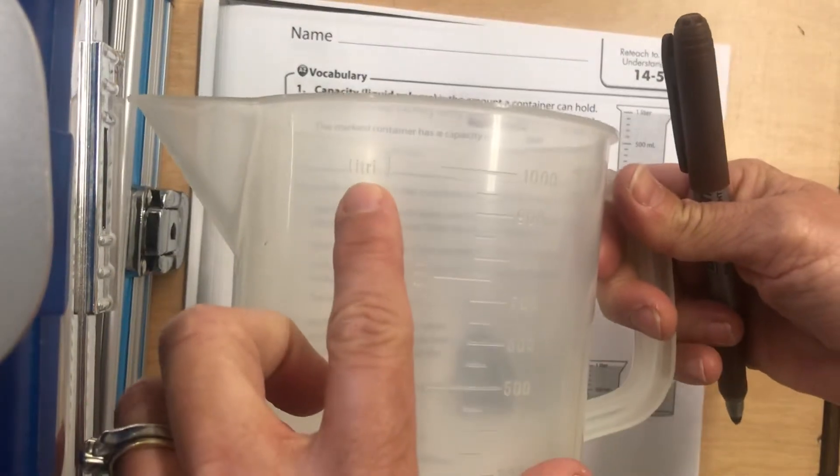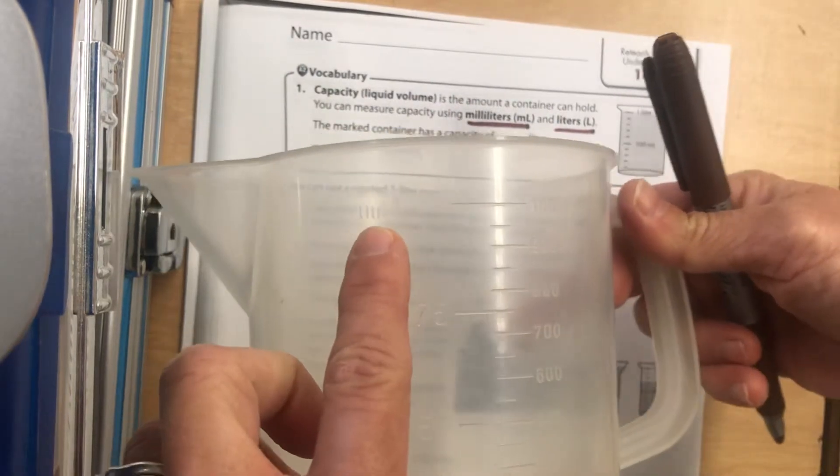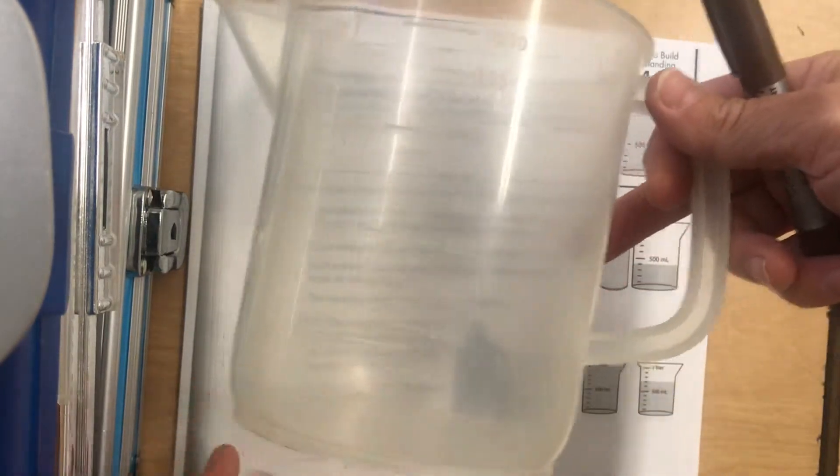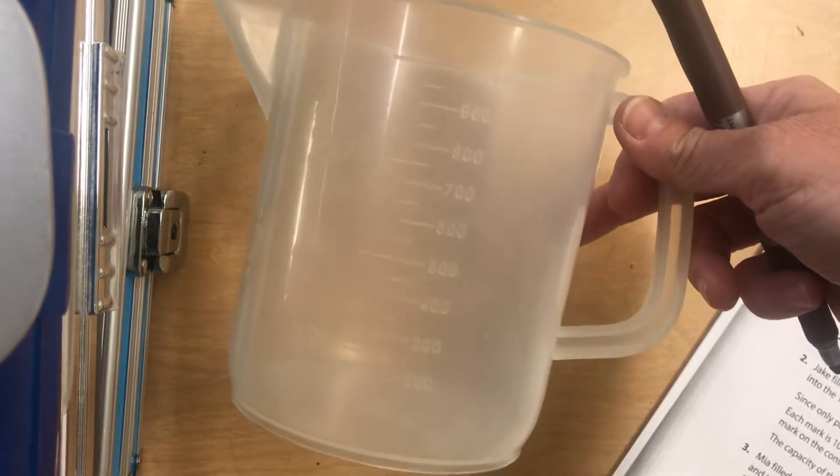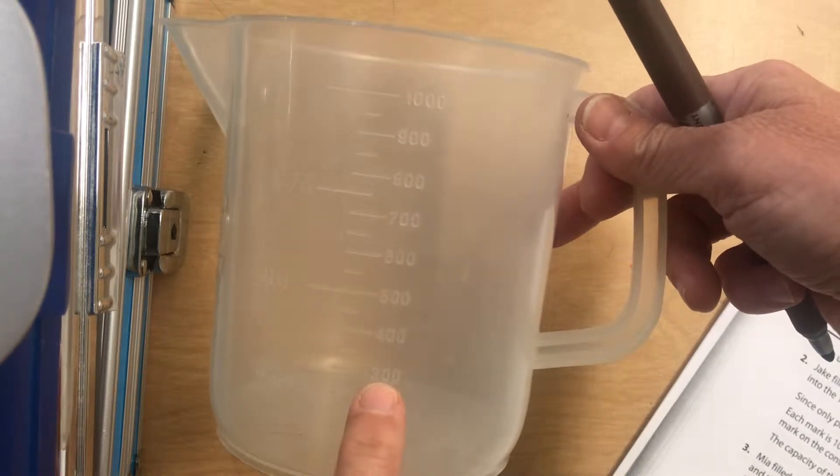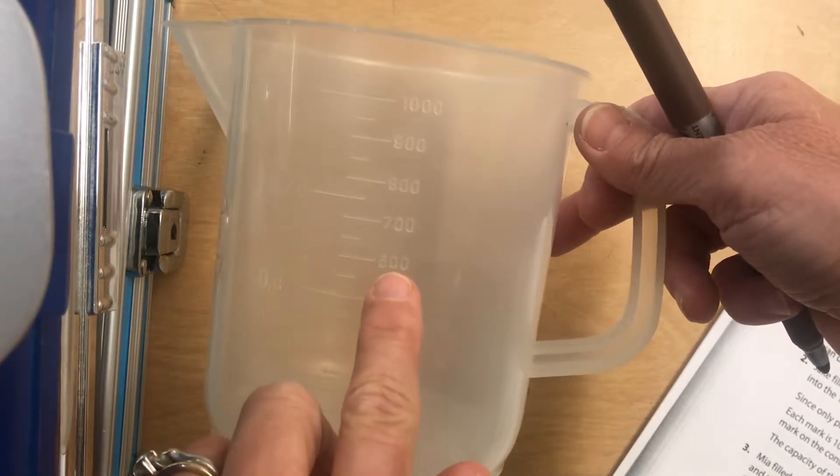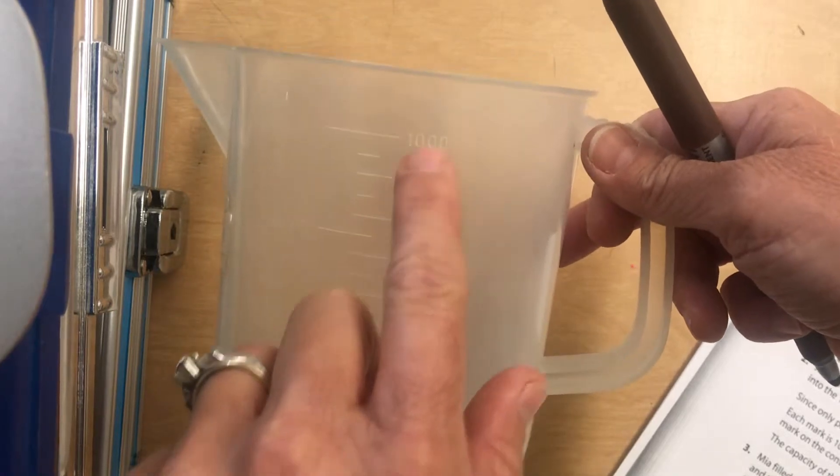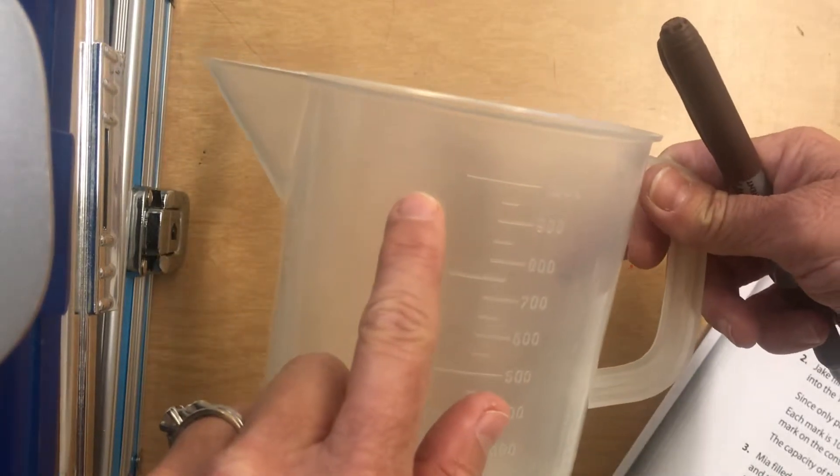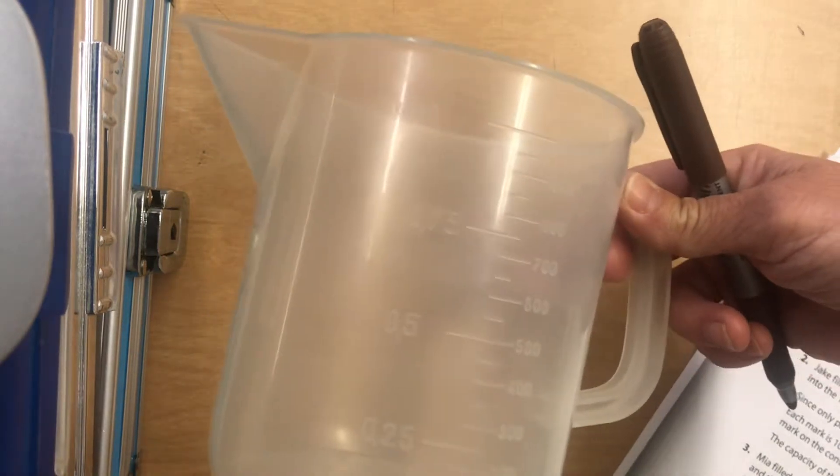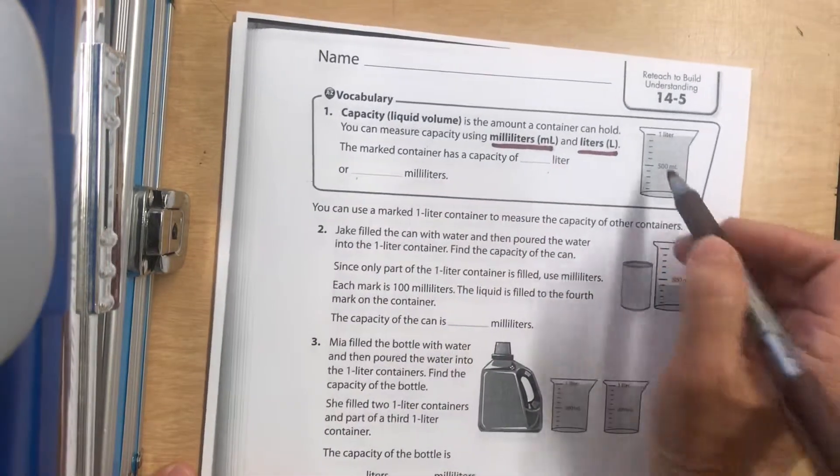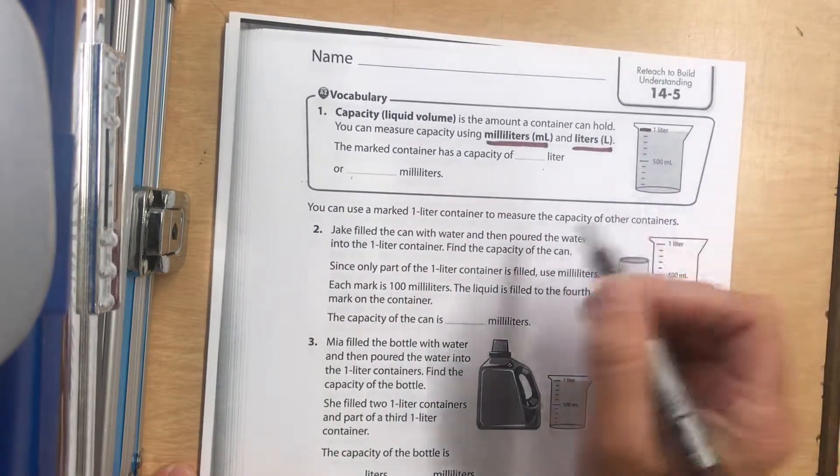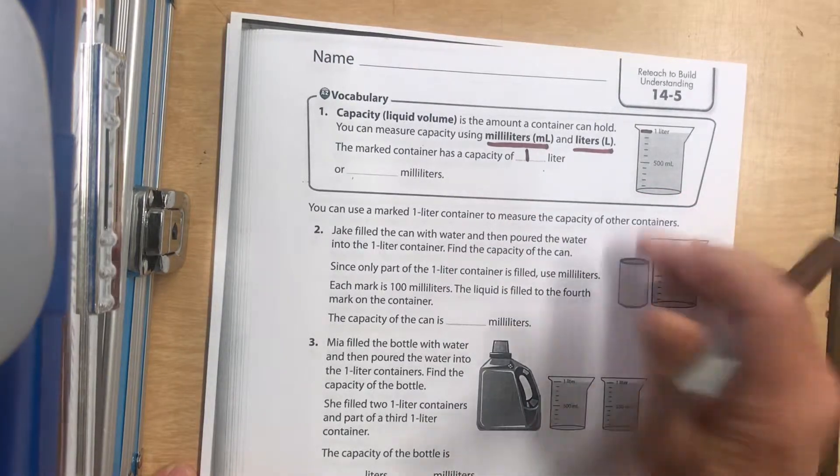This measuring cup has markings showing 100 milliliters, 200 milliliters, 300, 400, 500, 600, 700, 800, 900, up to 1,000 milliliters, which is the same as one liter. You can see the lines on it. This line here is for one liter, so it has a capacity of one liter.